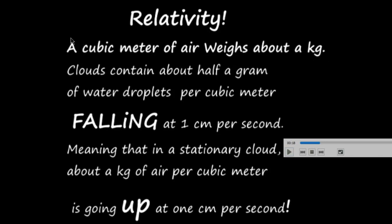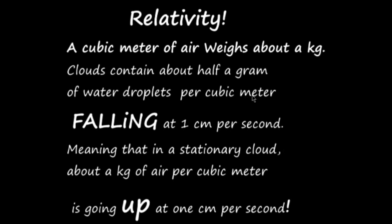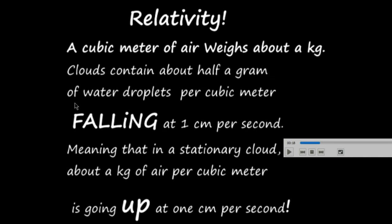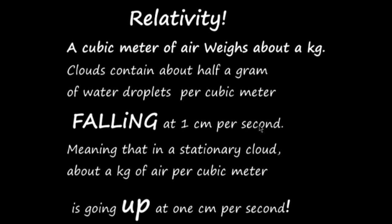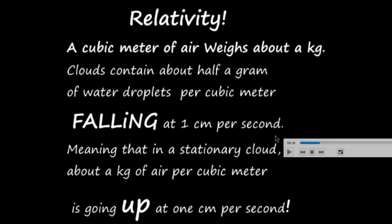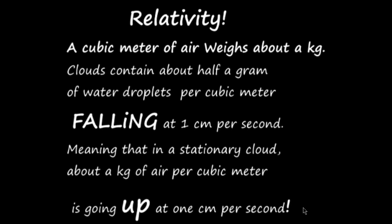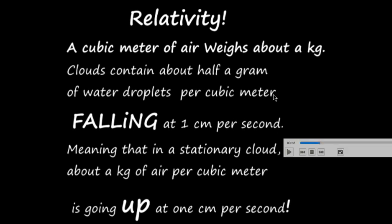A cubic meter of air weighs about a kilo, at around 10,000 feet. Clouds contain about half a gram of water droplets per cubic meter, and hurricanes contain about a gram per cubic meter — substantially more water droplets. The average speed of the smallest cloud droplets is about a centimeter per second. They fall a little and vaporize, while others materialize around them and fall a bit, in a constant cycle. In a stationary cloud, about a kilo of air per cubic meter is going up at one centimeter per second to counter the droplets falling. So it's about two thousand times as much air going up as water going down.